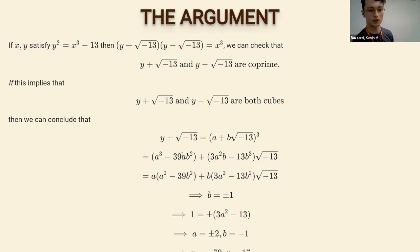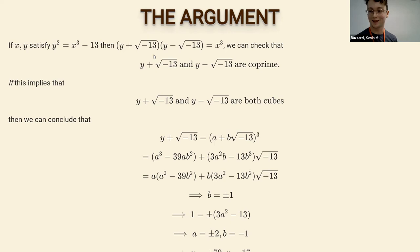Now we're just working with integers. If b is plus or minus one, following the algebra, three a squared minus 13 must be plus or minus one. That means a must be plus or minus two and b must be minus one. Substituting back gives us y, and then squaring and adding 13 gives the cube of x. The conclusion is x equals 17 and y equals 70.